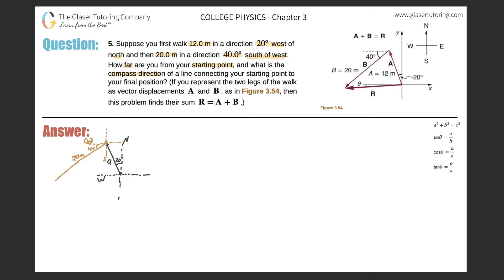So now it wants us to find essentially the resultant vector. What we're looking for now is this piece — this is our R. And what they want us to find now is the location or the compass direction. It looks like it's almost going a little bit below this particular line, so we might have a little angle in here. But don't worry about that for now. There's actually a nice simple technique to use to figure this out.